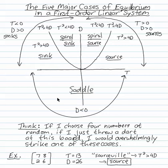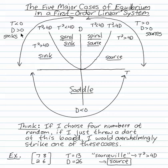In the lower half of this plane, whenever the determinant is negative, that's always a saddle. When the determinant is positive, we either have trace positive — the right upper quadrant — those are sources, or trace negative — the left upper quadrant — those are sinks.